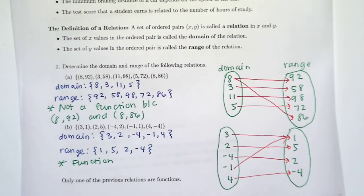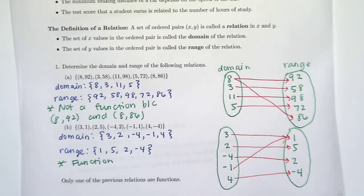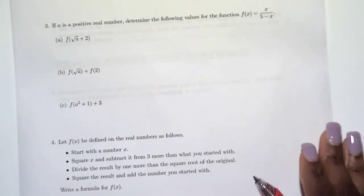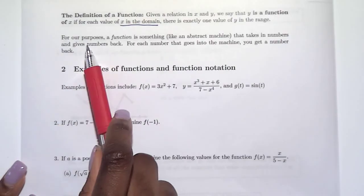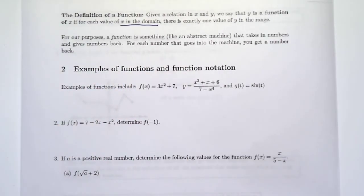That's how you determine whether or not a relation is a function. For our purposes, a function is something kind of like a machine that takes numbers in and gives numbers out. For each number that goes in the machine, you should get a number that goes back out. And that is a function.